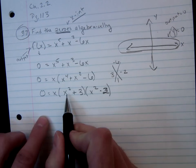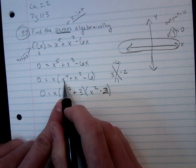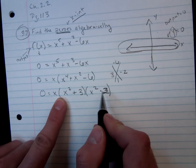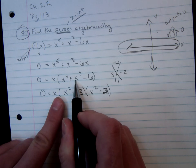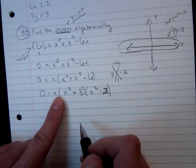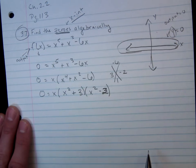And then just double checking, if I do first, I get x squared times x squared is x to the fourth. Then I get x squared times negative 2, so negative 2x squared plus 3x squared would give me x squared. And then 3 times negative 2 is negative 6. So I know that I can get back from my factors to my original equation here.